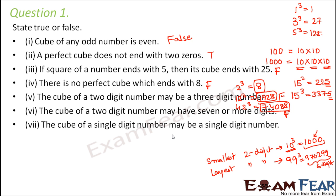The cube of a single-digit number may be a single-digit number — yes, very much possible. 1 cubed is 1 (single digit), and 2 cubed is 8 (also single digit). Both 1 and 2 are single-digit numbers whose cubes are also single-digit numbers. So it is quite possible that the cube of a single-digit number is also a single-digit number.